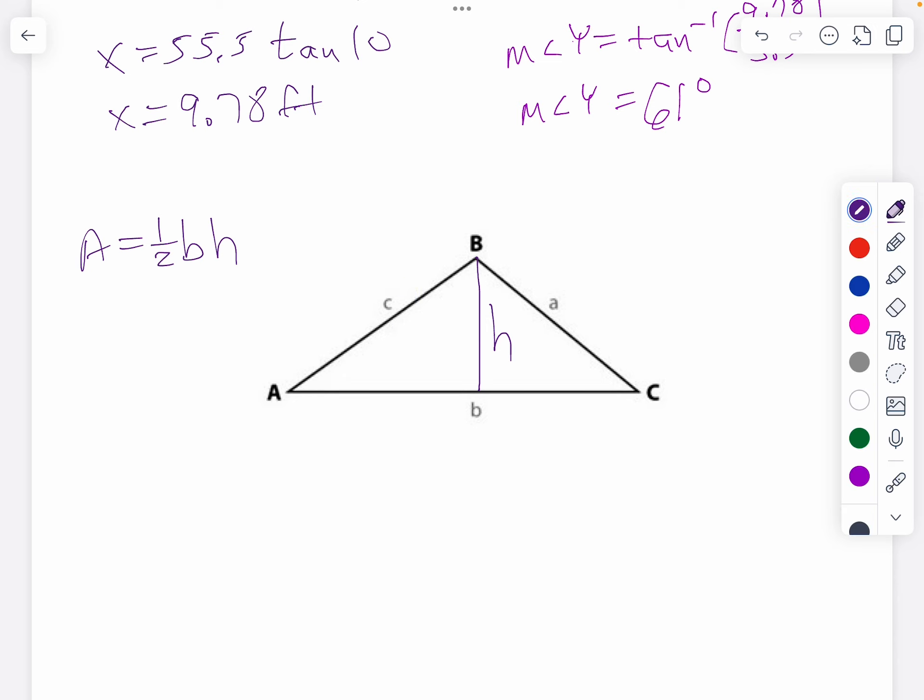Opposite over hypotenuse is sine. So we're going to say the sine of angle A is the opposite, which is h, over c. To solve for h, I'm going to multiply both sides by c, so h is c sine A.